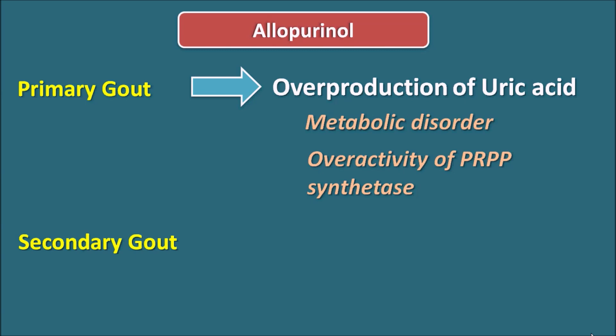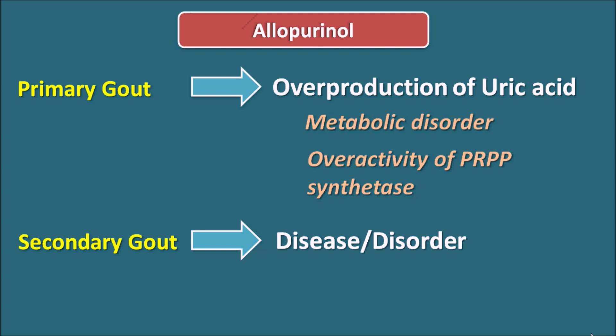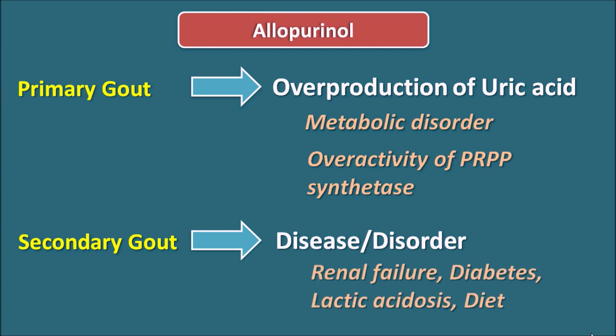Secondary gout is a condition produced by any disease or disorder. Conditions such as renal failure, diabetes, lactic acidosis, and a diet rich in purines may increase uric acid levels. In such conditions, allopurinol can control uric acid levels. Not only disease or disorder conditions — some drugs can also increase uric acid levels, which can be controlled by allopurinol.